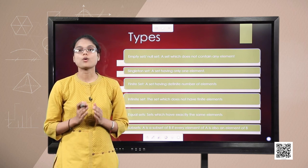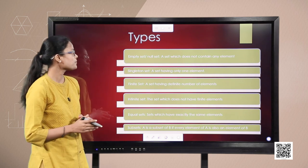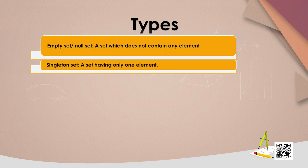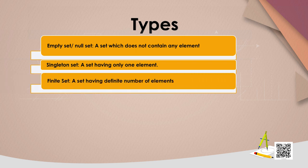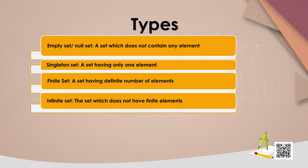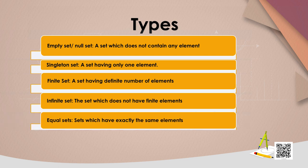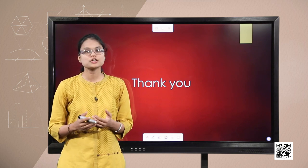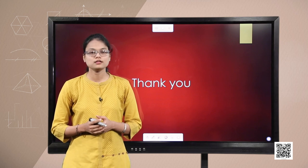Let us quickly recapitulate what we have done in this session. Today we studied: empty set — a set which does not contain any element; singleton set — a set having one element; finite set — a set having a definite number of elements; infinite set — a set which is not finite; equal sets — sets which have exactly the same elements; and subsets — A is a subset of B if every element of A is also an element of B. In the upcoming session, we will continue with subsets and study power sets and universal sets. Thank you.